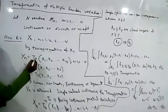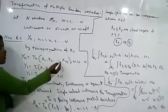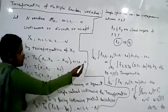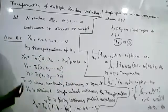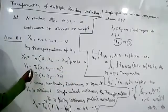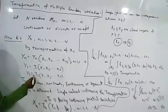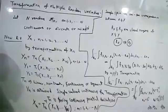y_n is equal to T_n of (x_1, x_2, ..., x_n), where n is varying from 1 to N. So if you want to find y_1, apply transformation T_1; y_2 is obtained by applying transformation T_2, and so on.